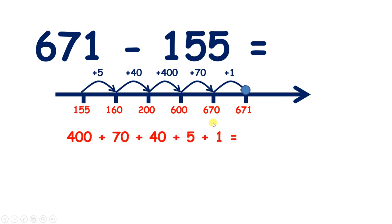So we added 400, 70, 40, 5, and 1. 70 plus 40 is 110, 5 plus 1 is 6. So if we add the 110 to 400, now we have 510 plus 6, which gives us 516. So 671 minus 155 equals 516.